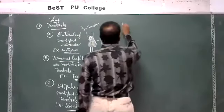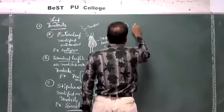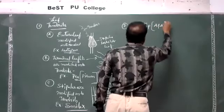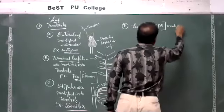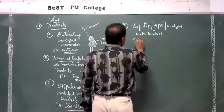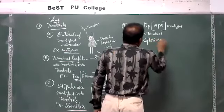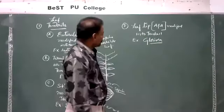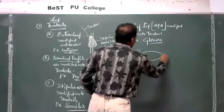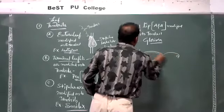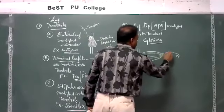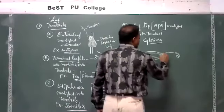Another example: leaf tip or leaf apex modified into tendril. Example: Gloriosa superba, which belongs to Liliaceae. In this plant, the leaf tip is modified into a tendril — the tip of the leaf.